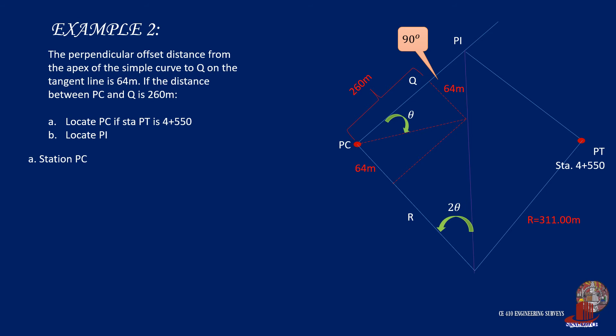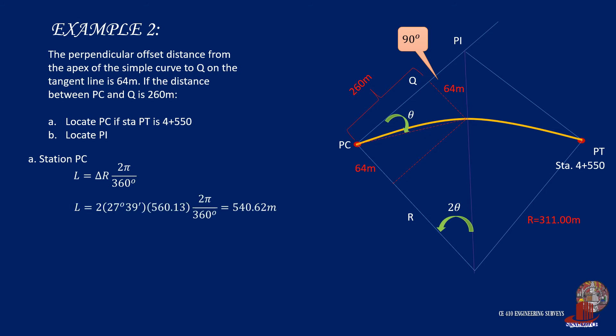With the radius and theta already figured out, we can compute the length of curve from the equation L equals delta times R times 2 pi over 360 degrees. Placing the values gives L equal to 540.62 meters. Then, originating at station PT designated as 4 plus 550, subtract the length of curve of 540.62 meters, and the difference is 4 plus 9.38 meters, which is station PC.